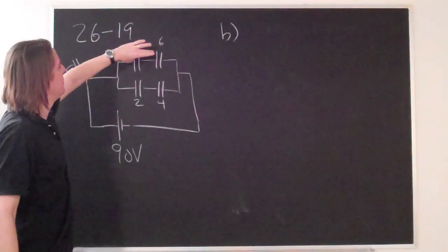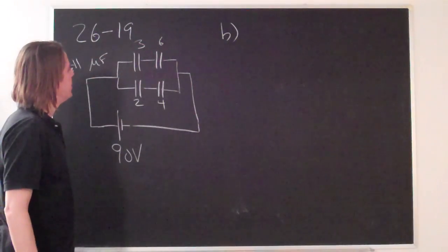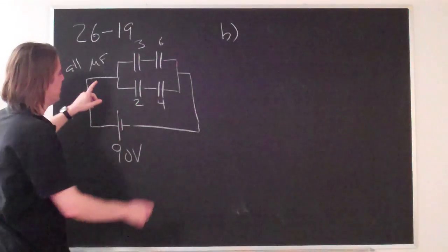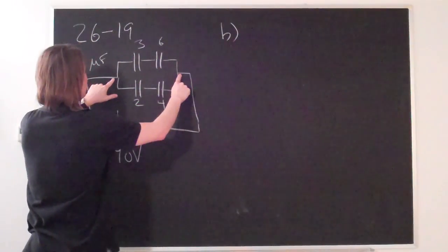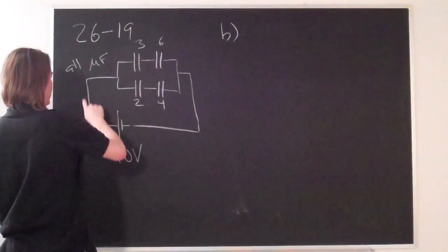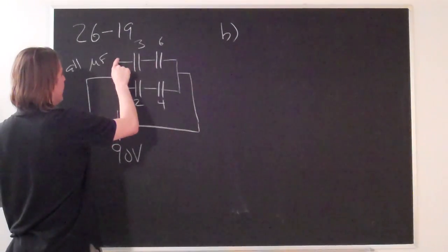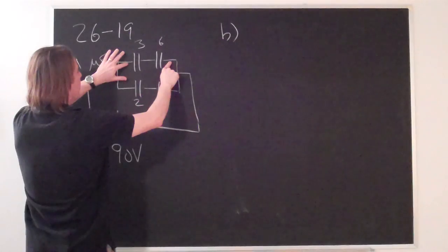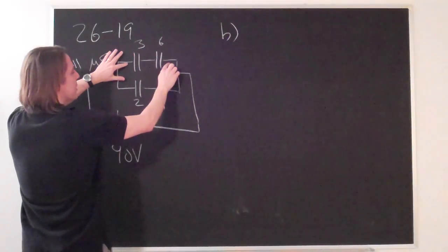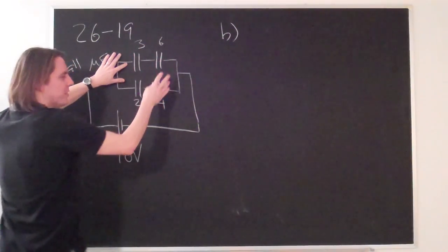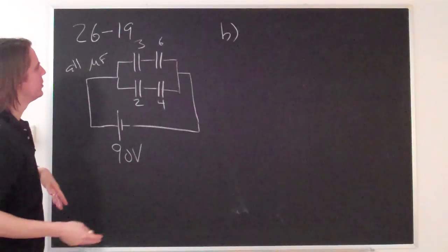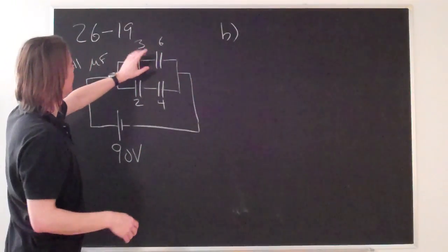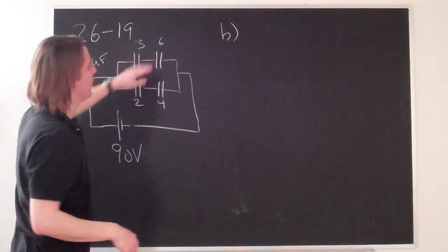To figure out the charge, we would want to take the step forward where we treated these each as one equivalent capacitance, C_eq1 and C_eq2. If this were just one capacitor, we'd have 90 volts across it, because anywhere along the metal wire it's 90 volts, and here we're at zero. So if we know the capacitance and the voltage, we can get the charge.